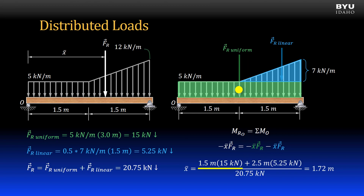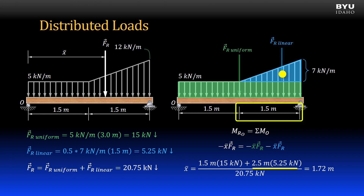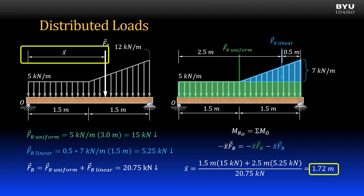We write x-bar times the resultant force equal to the resultant force of the rectangular uniform load times its centroid, plus the resultant force of the triangular load times its centroid. The centroid of the uniform load is at its midpoint, 1.5 meters. The centroid of the triangular load is at one-third its base dimension from the tall end — the base is 1.5 meters, so its centroid is 0.5 meters from the right end, meaning 2.5 meters from point O. Dividing by the resultant load gives x-bar equal to 1.72 meters from point O. Use this method for any loading condition that can be easily broken into a few simple shapes.